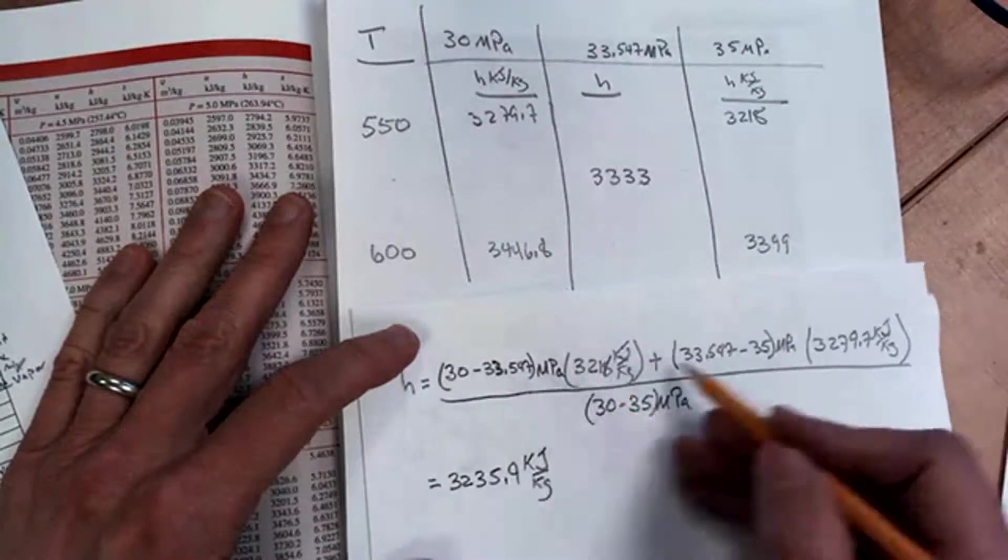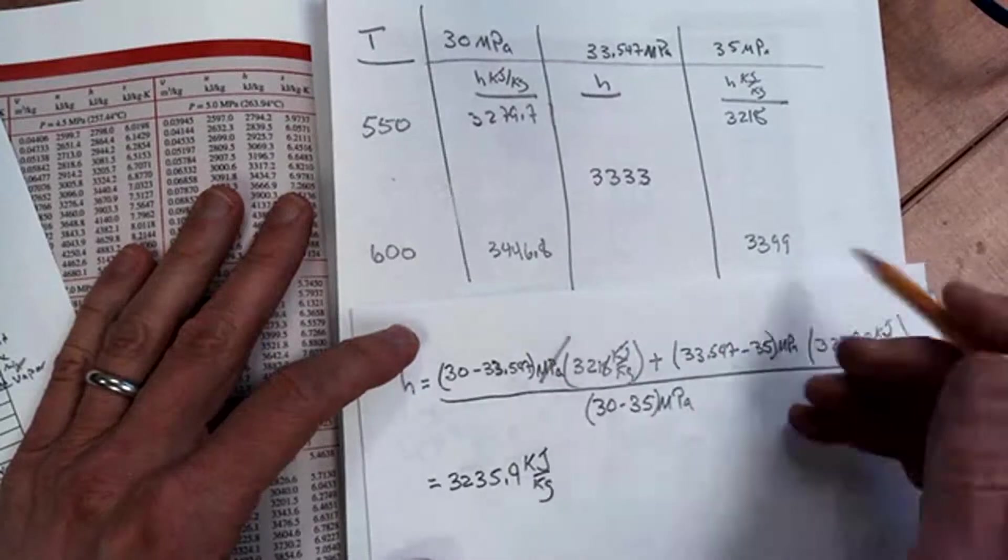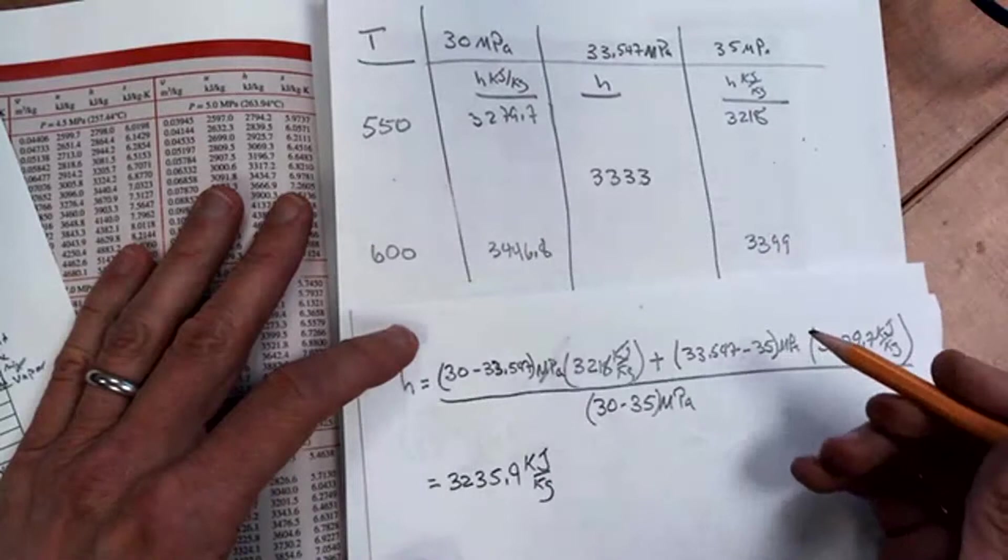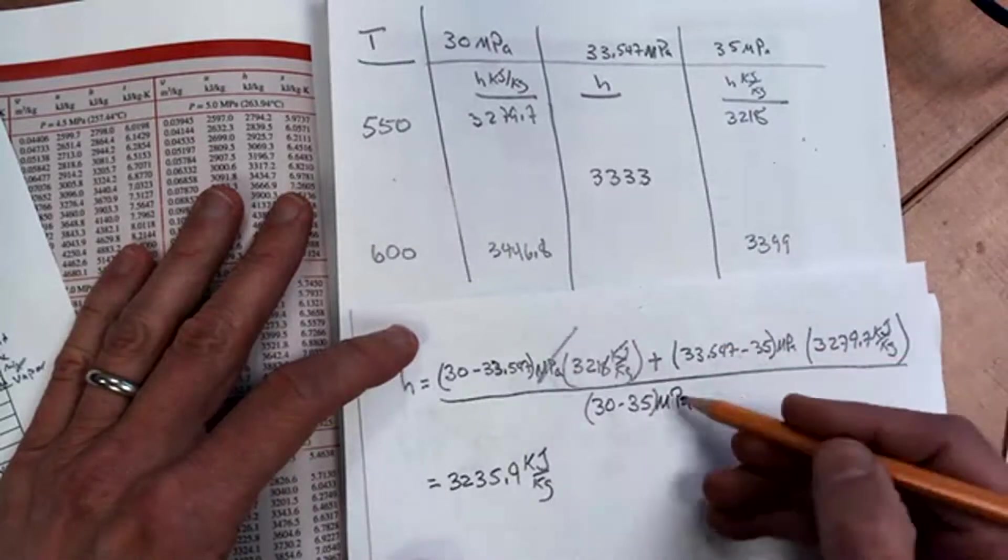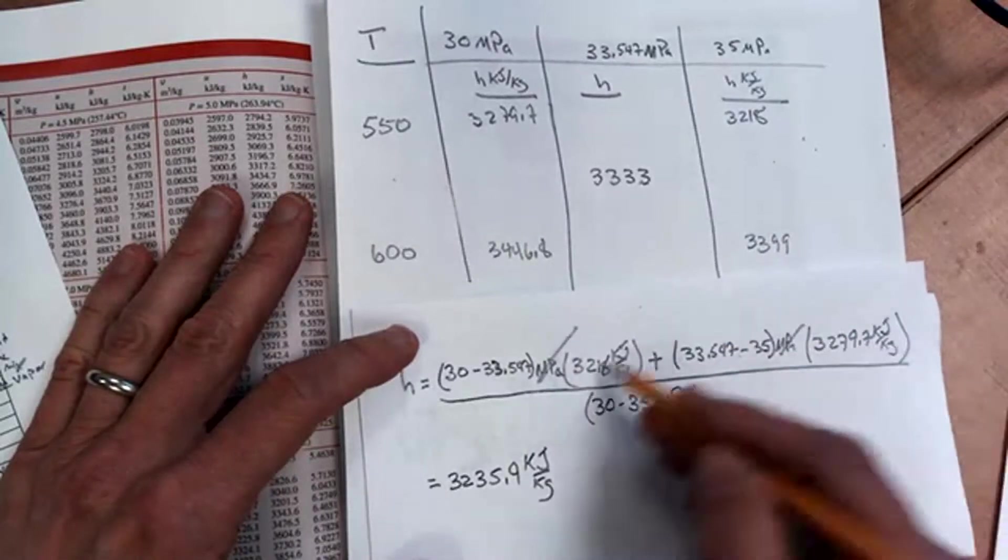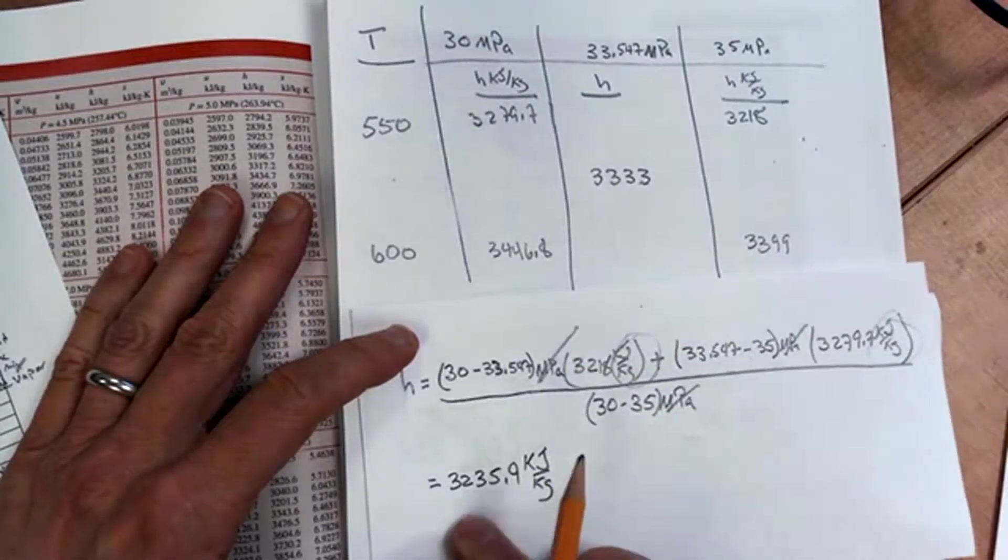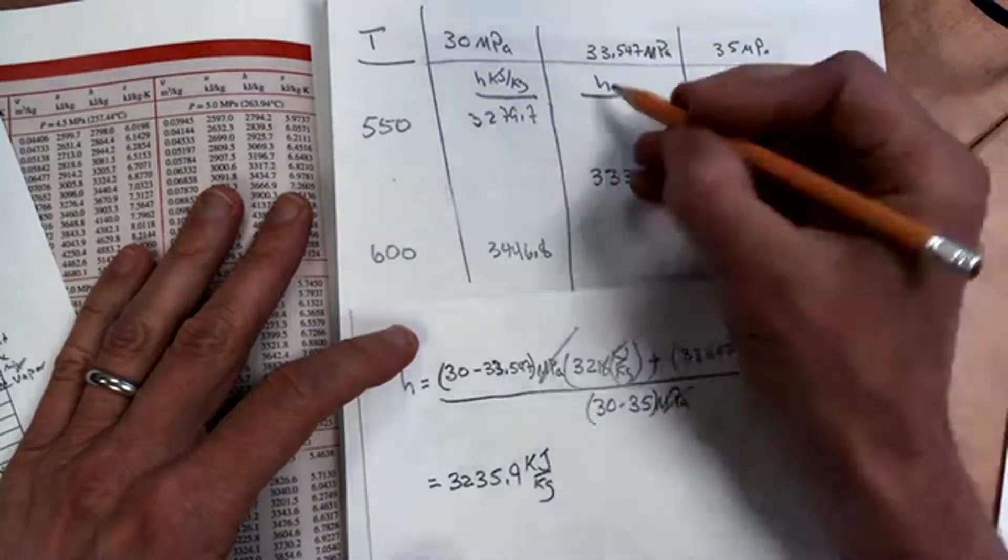Also notice that if I wrote the units here, that the megapascals, that's not true. The megapascals would stay. The megapascals would cancel the megapascals on the top and the bottom. And I'd be left with kilojoules per kilogram. So I do this algebra and I get 3,235.9.